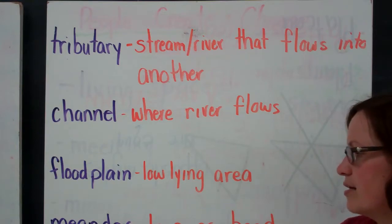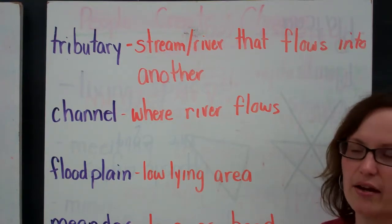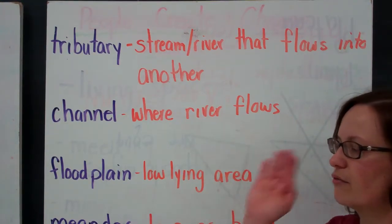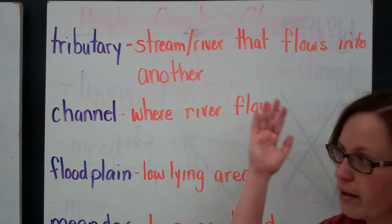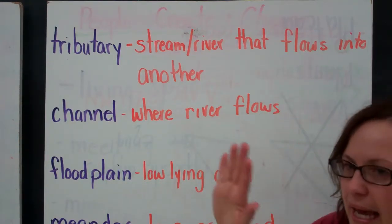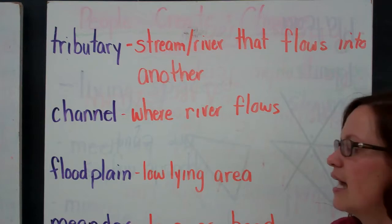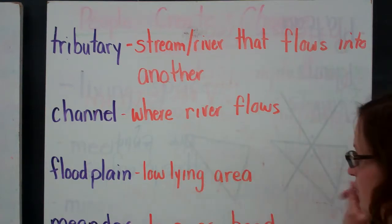Meander. A meander is a loop or a bend in the channel. Very rarely do rivers go straight from one point to another. They kind of meander across the earth's surface and that's what it's called, that meander, that loop or bend.